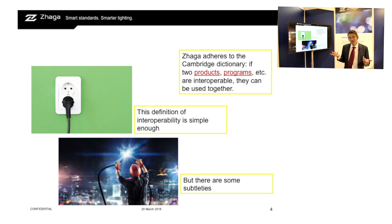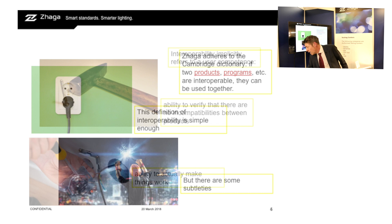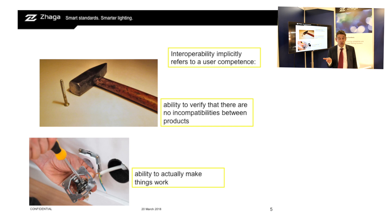But in this definition of the Cambridge Dictionary, there are still some subtleties hidden. Let me go through them now. One, and that's the foremost thing, is that this CAN implicitly refers to a user competence.